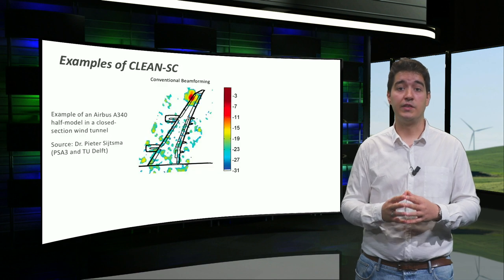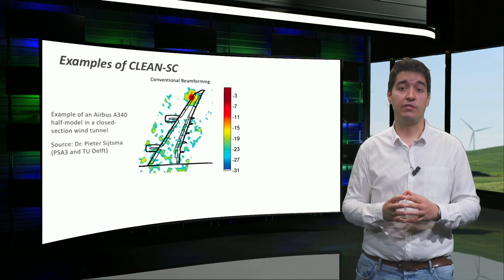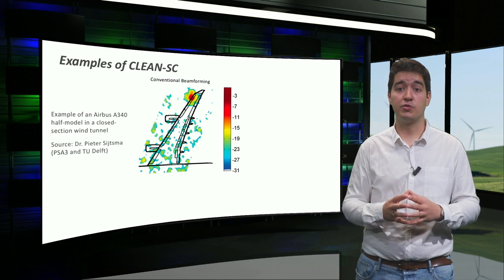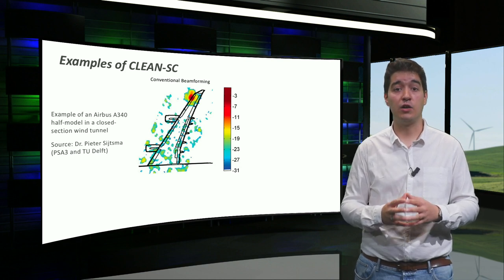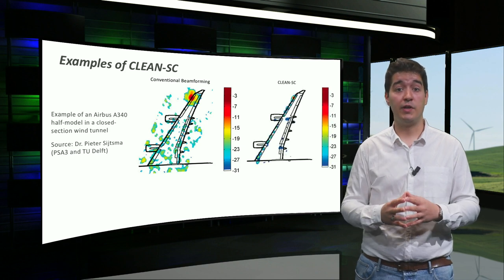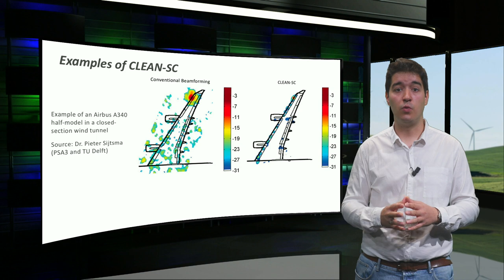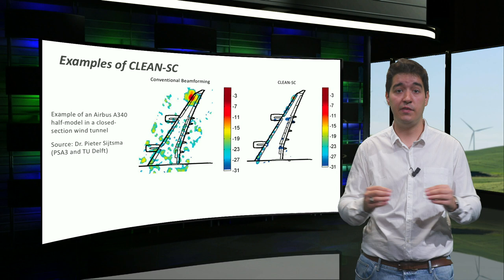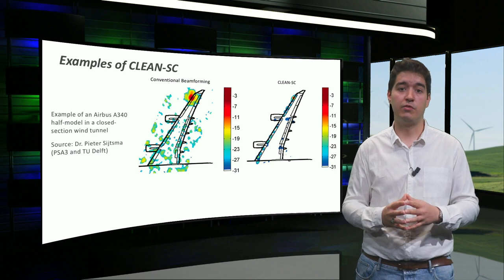In this slide, we can see an example of the potential of CleanSC. Here we have a conventional beamforming source map of an aircraft model in a closed section wind tunnel. By using CleanSC, we obtain much better results with virtually no side lobes. We can even discover new sound sources along the leading edge that were hidden by side lobes before.